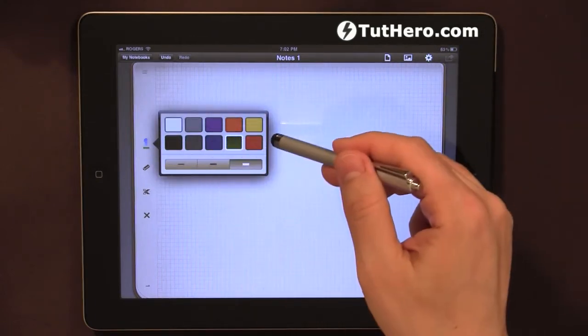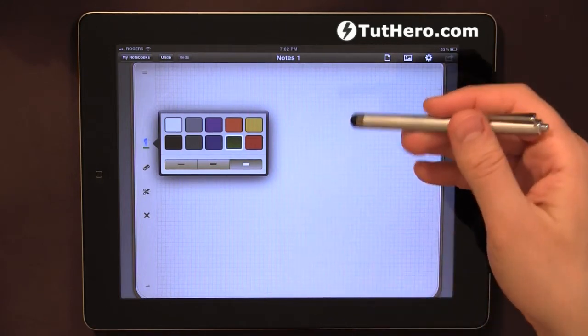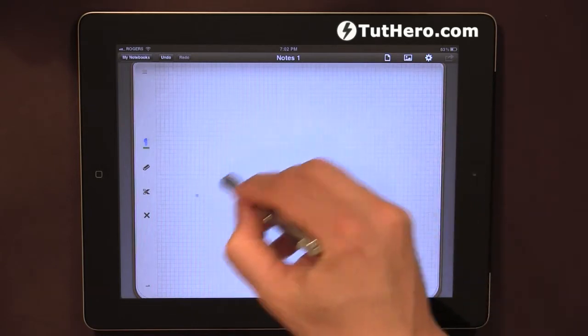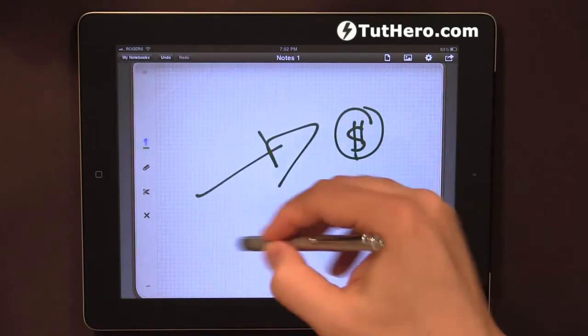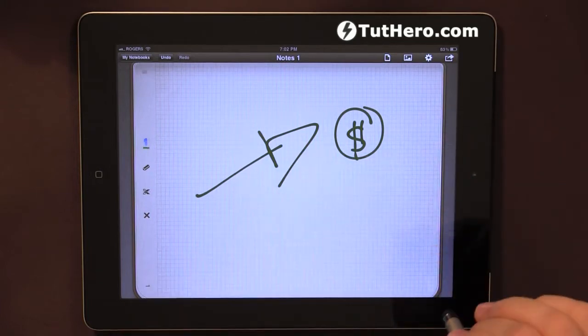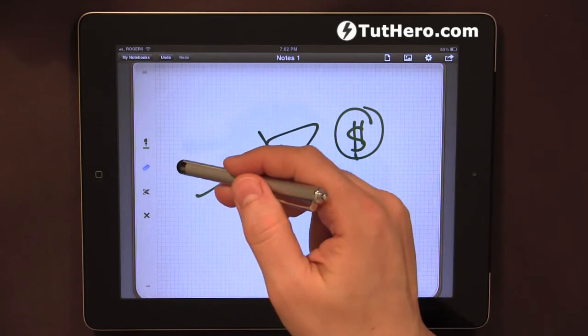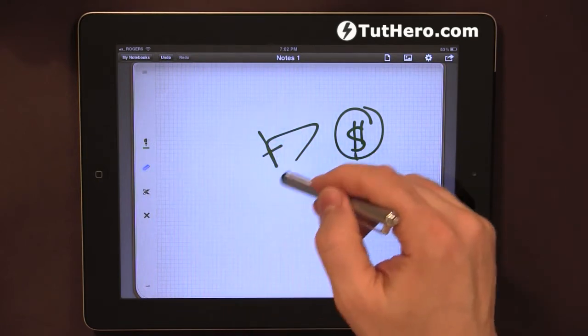Again, we have different colors. This is not really a drawing or painting application, it's more for note-taking, like making arrows to point to numbers and things like that.